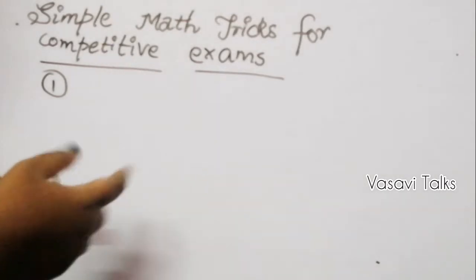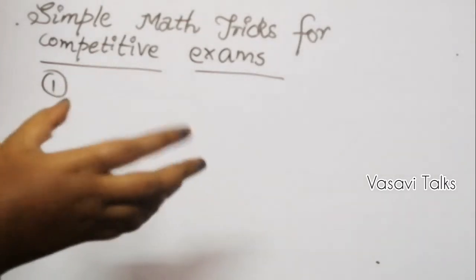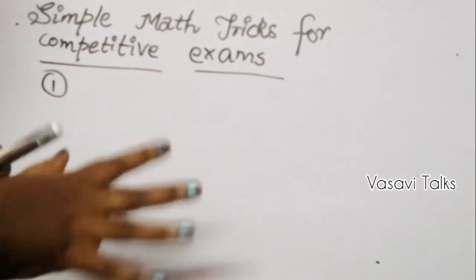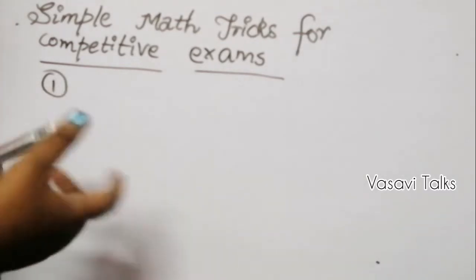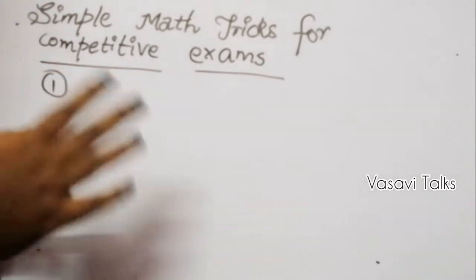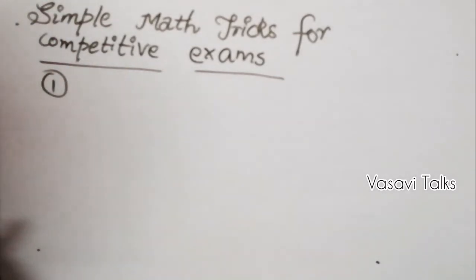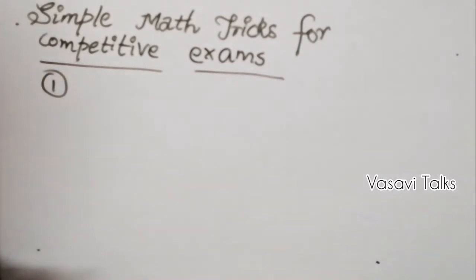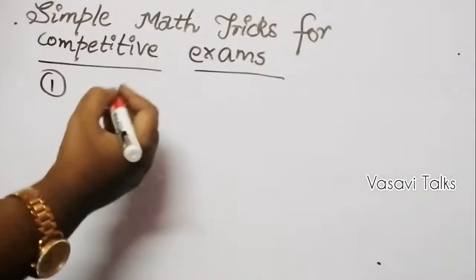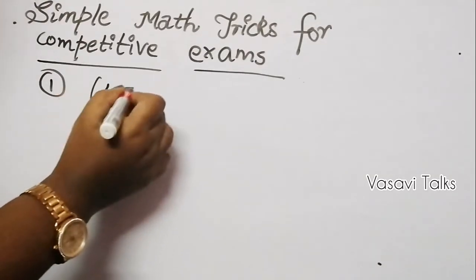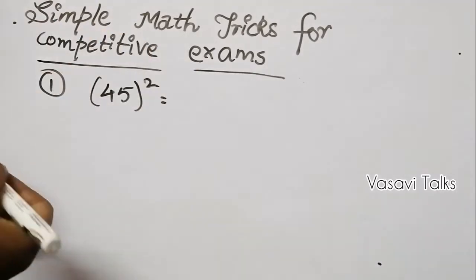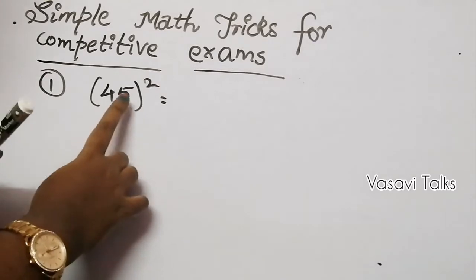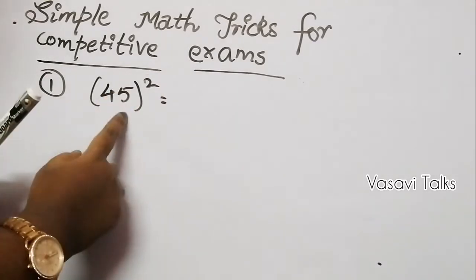If you have a two-digit number ending in 5, we can easily find its square. We will use a formula to find the square of any two-digit number ending in 5. This is Trick number 1.